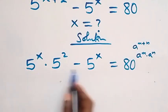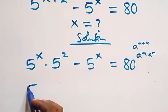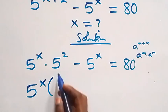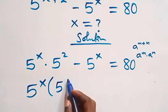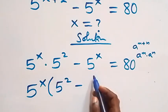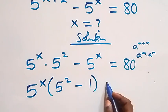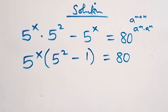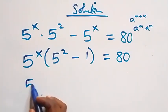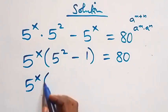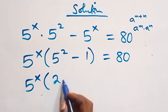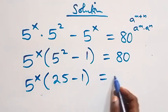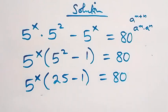Here we factor out 5 raised to power x, giving us 5 raised to power x, into brackets 5 squared minus 1, close bracket, equals 80. This simplifies as 5 raised to power x into brackets 25 minus 1, equals 80.